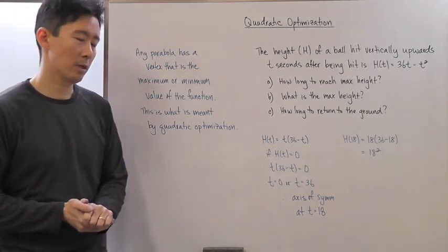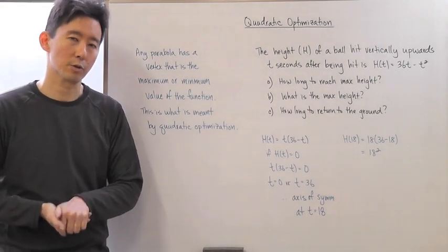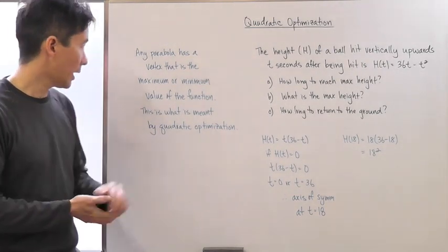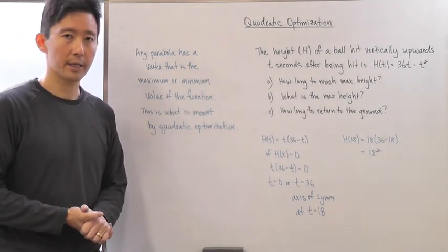That's what we're talking about when we discuss quadratic optimization. We try to look for the minimum or the maximum values of the curve, and any problem is going to have a vertex.